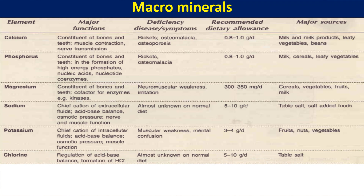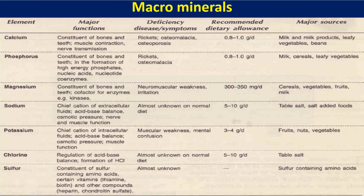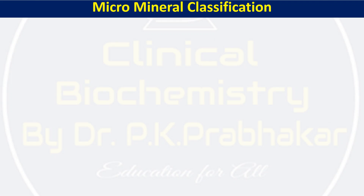Chlorine regulates acid-base balance and is involved in the formation of hydrochloric acid in the GI tract. Its requirement is 5 to 10 grams per day and it is obtained from sodium chloride in table salt. Sulfur is a constituent of sulfur-containing amino acids, certain vitamins like thiamine and biotin, coenzyme A, and protein factors like heparin and chondroitin sulfate. It is obtained from sulfur-containing amino acids.